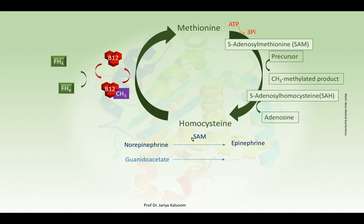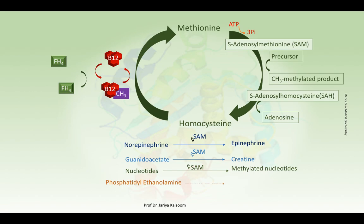S-adenosylmethionine may also donate the methyl group to guanidinoacetate, converting it into creatine. It can lead to the methylation of DNA by donating its methyl group to nucleotides. It can donate the methyl group to phosphatidylethanolamine, converting it into phosphatidylcholine. And finally, it can donate its methyl group to acetylserotonin, converting it into melatonin.